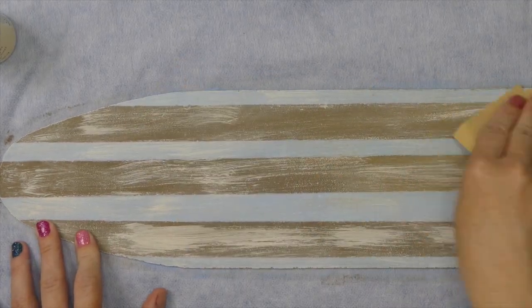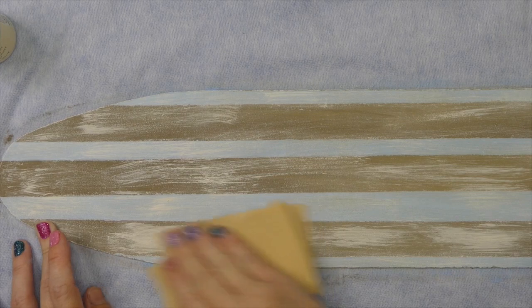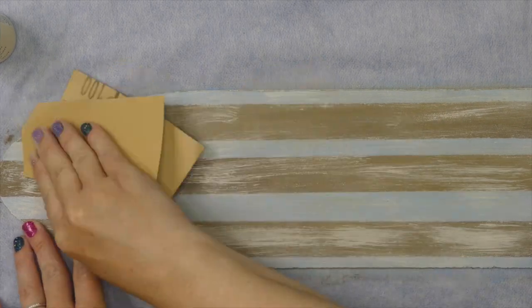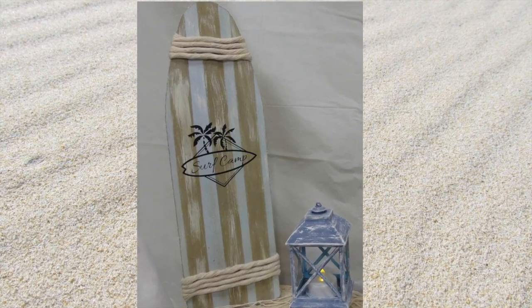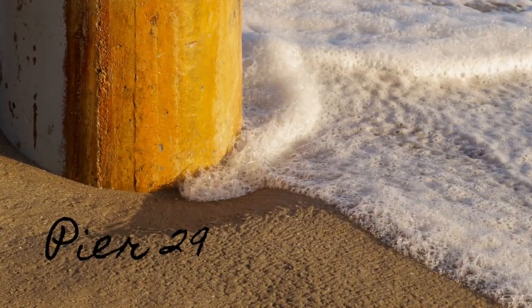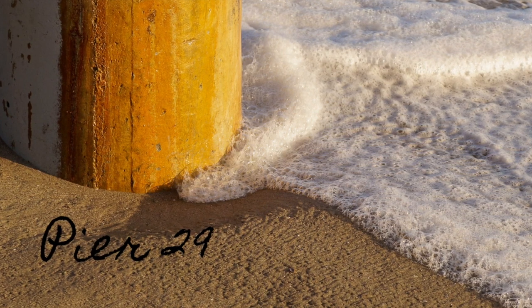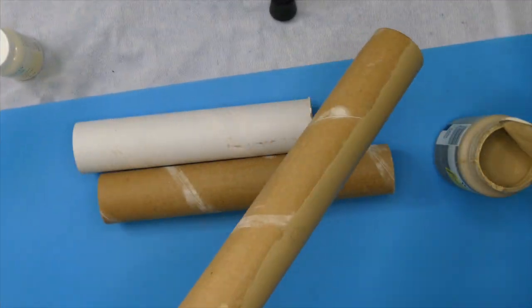Now I'm sanding it down to make the lines less harsh and softer. I added a decal that says Surf Camp from my Cricut and that project is done.